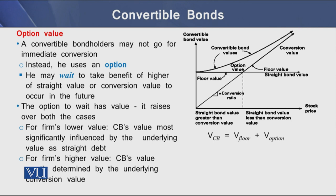Whereas if there is a higher value for the firm, the convertible bond's value is mostly determined by the underlying conversion value. As shown in the right panel figure, the value of a convertible bond is the sum of its floor value and the value of the option used by the bond holder.